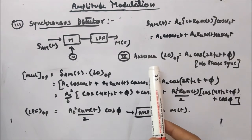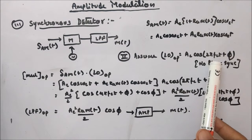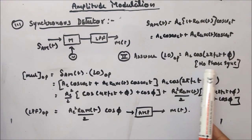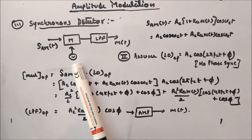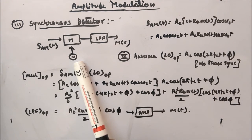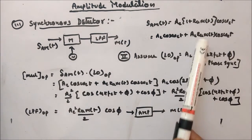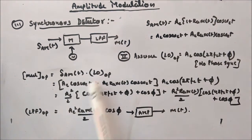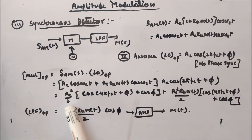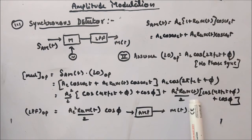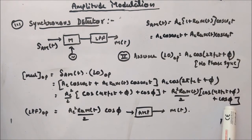Now let's look at the second case. Assume the local oscillator output is Ac·cos(2π·fc·t + φ) — there is no phase synchronization; there is some phase offset φ. Multiplying s(t) by this local oscillator signal, you get Ac²/2·[cos(4π·fc·t + φ) + cos(φ)] plus Ac²·ka·m(t)/2·[cos(4π·fc·t + φ) + cos(φ)].